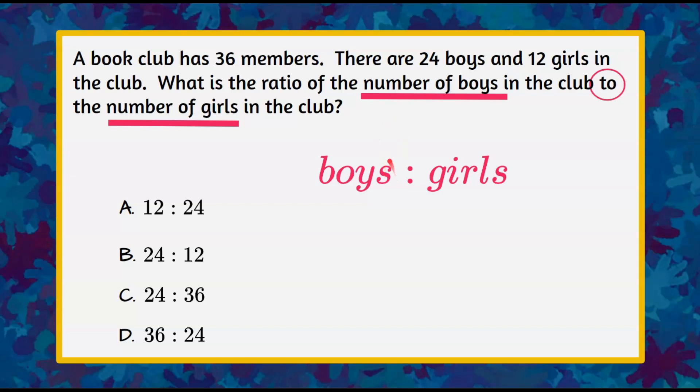So moving on, we need to find the number of boys and the number of girls in the club. So we can see that there are 24 boys and 12 girls in the club. So when we rewrite that, we have 24 boys and 12 girls.